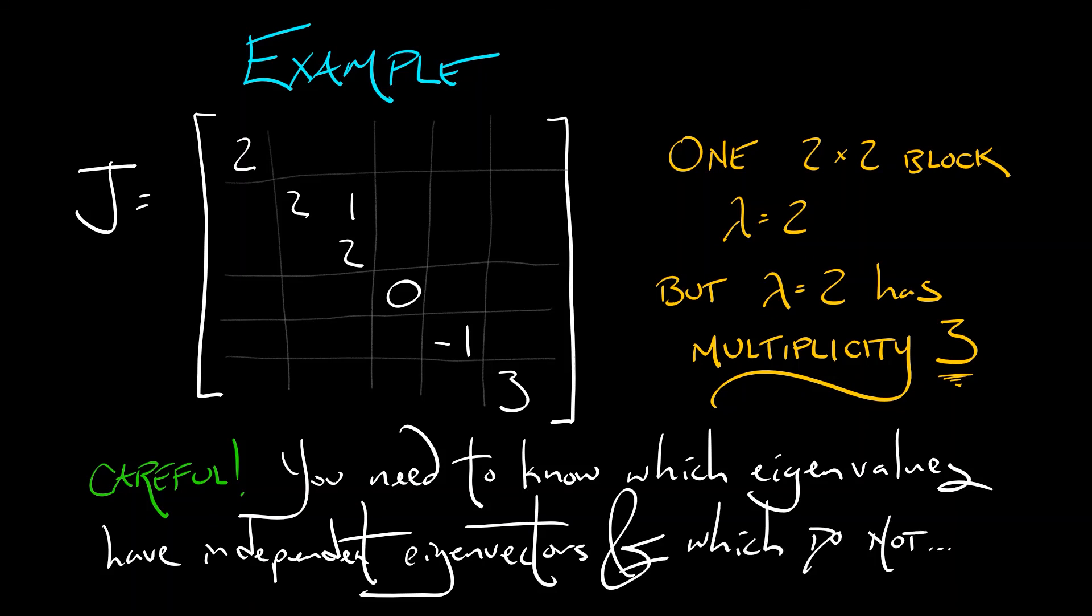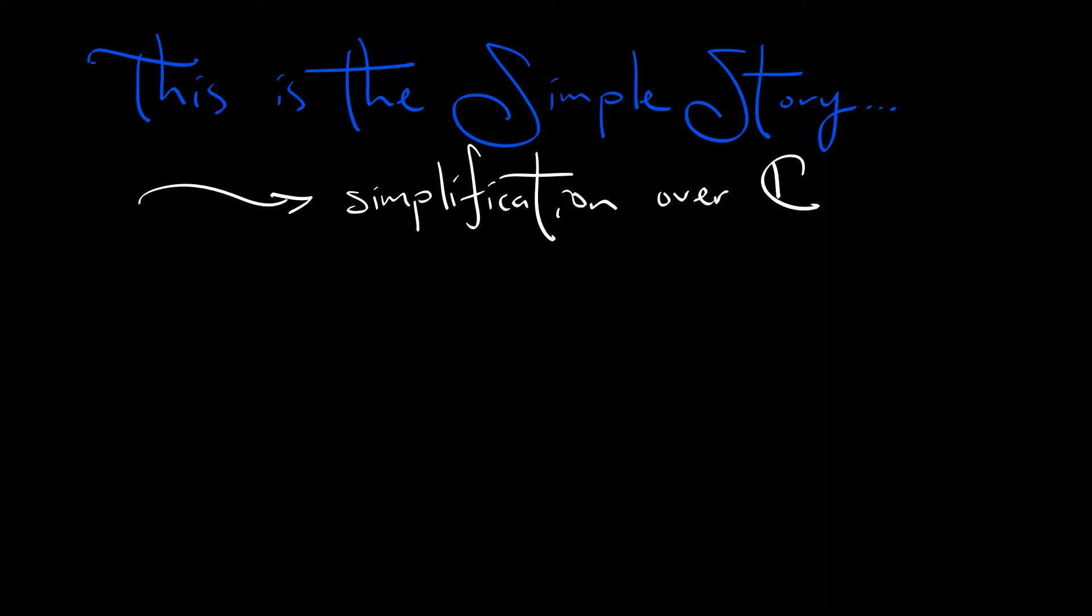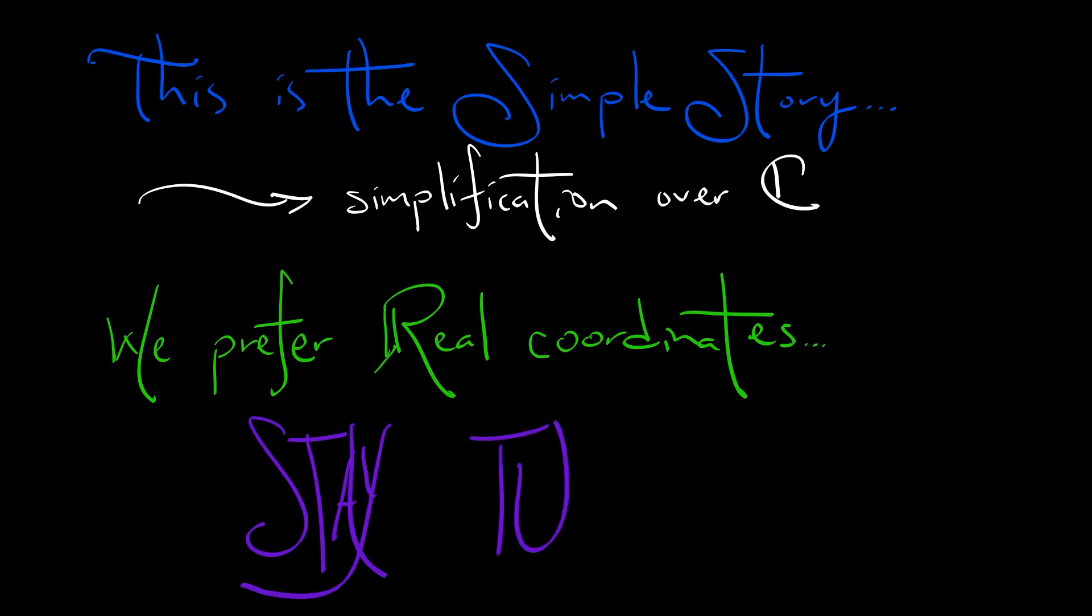This is a simple example presenting the Jordan canonical form over the complex numbers. It's going to get more difficult when we get to complex eigenvalues, because we prefer real coordinates when working with dynamical systems. So stay tuned—we're sticking with the reals for now. When we turn to complex eigenvalues, things will get more complicated.